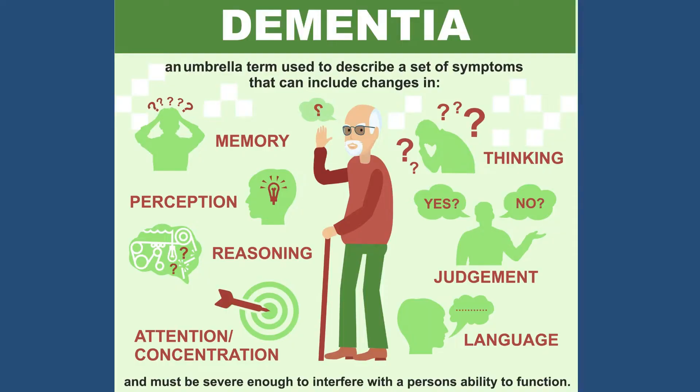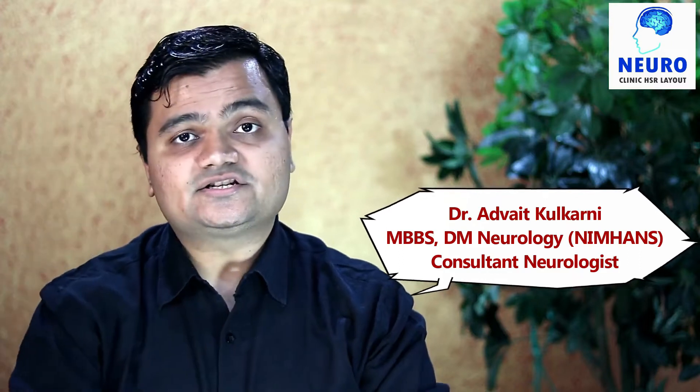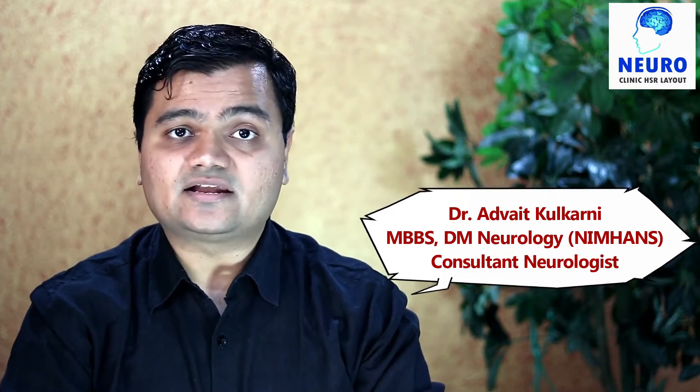Alzheimer's disease classically happens after 60 years of age, but nowadays we are also seeing it happening at younger ages. The person forgets recent events, visual-spatial orientation is lost, and the person is unable to locate or navigate through places and routes.